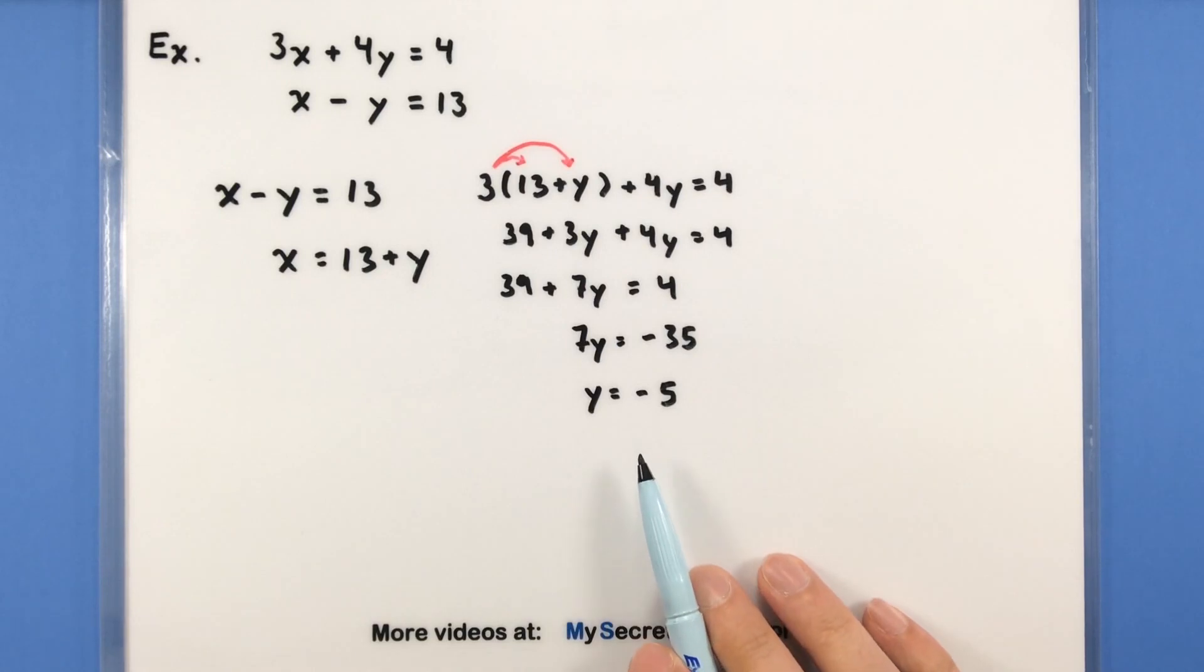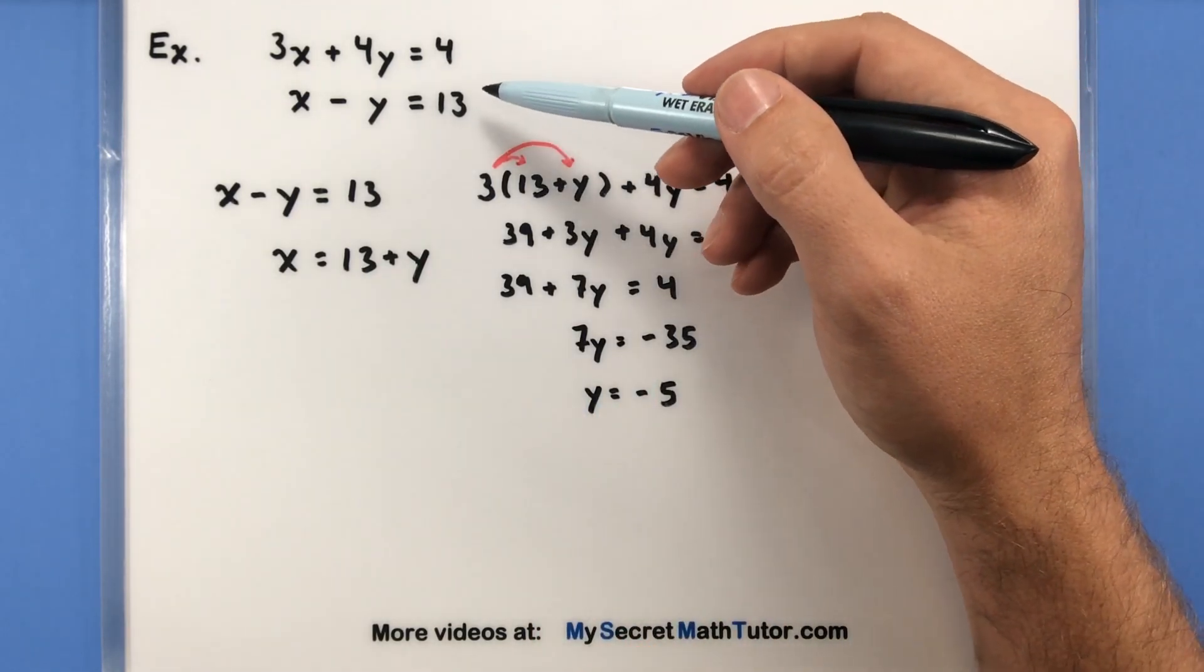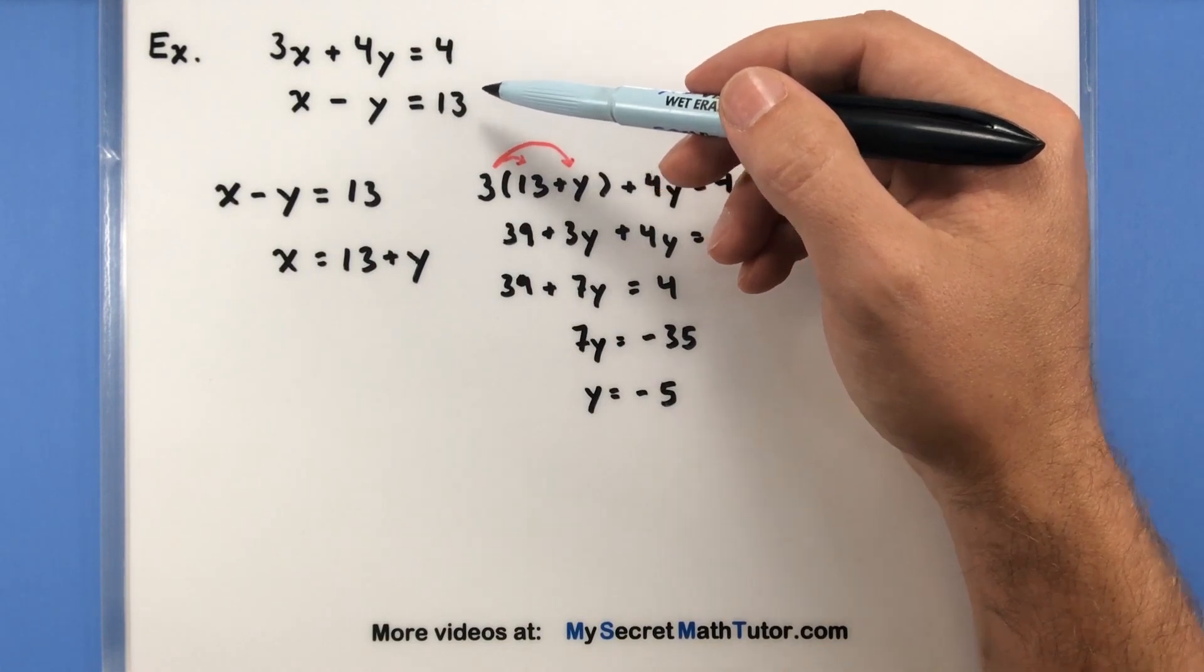Okay, so we have one of our variables, but now again, we go through that substitute and solve process one more time. We do that by taking our value for y here, and we substitute it into either one of our original equations, like x minus y,